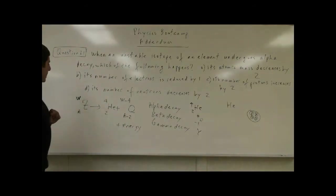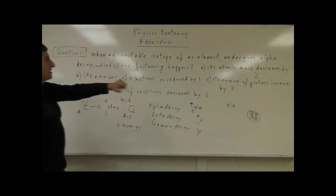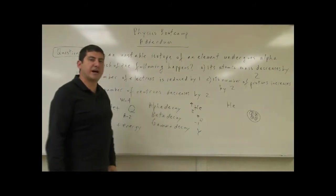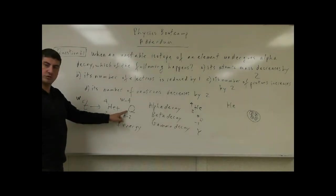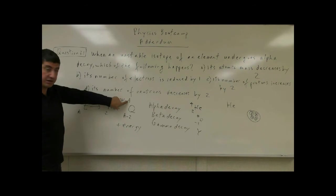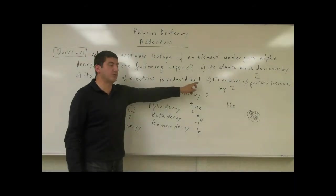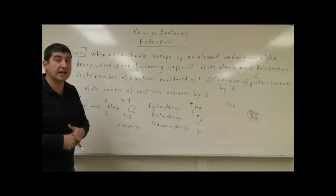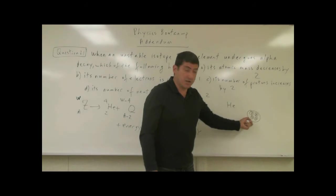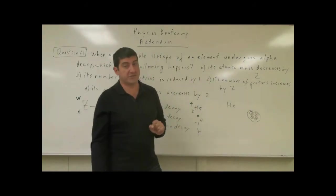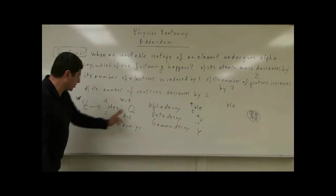Now the question asks: when an unstable isotope undergoes alpha decay, which of the following happens? Choice A: its atomic mass decreases by two — does the atomic mass decrease by two? No, it decreases by four, so A is wrong. Choice B: its number of electrons is reduced by one — does anything happen to the number of electrons? No, alpha decay is just the emission of the helium nucleus, so nothing happens to the number of electrons.